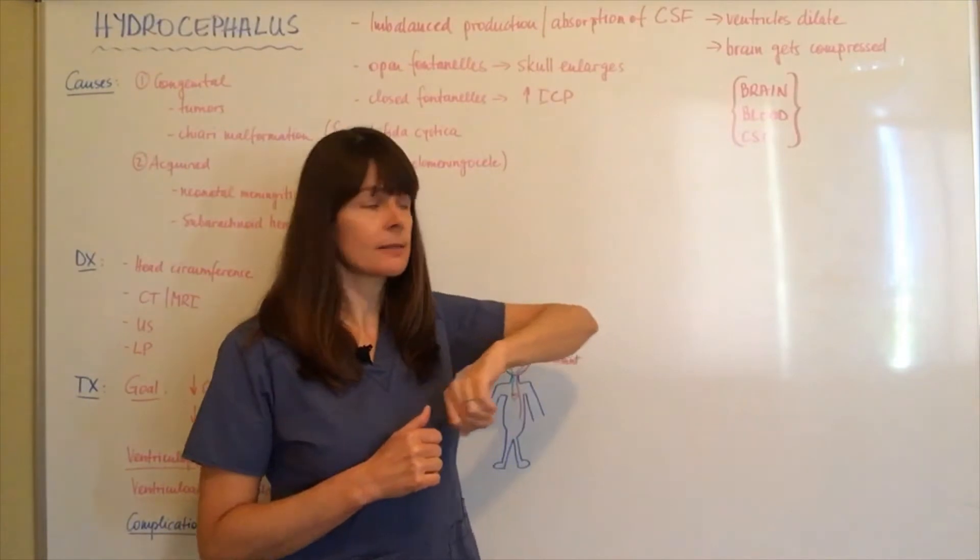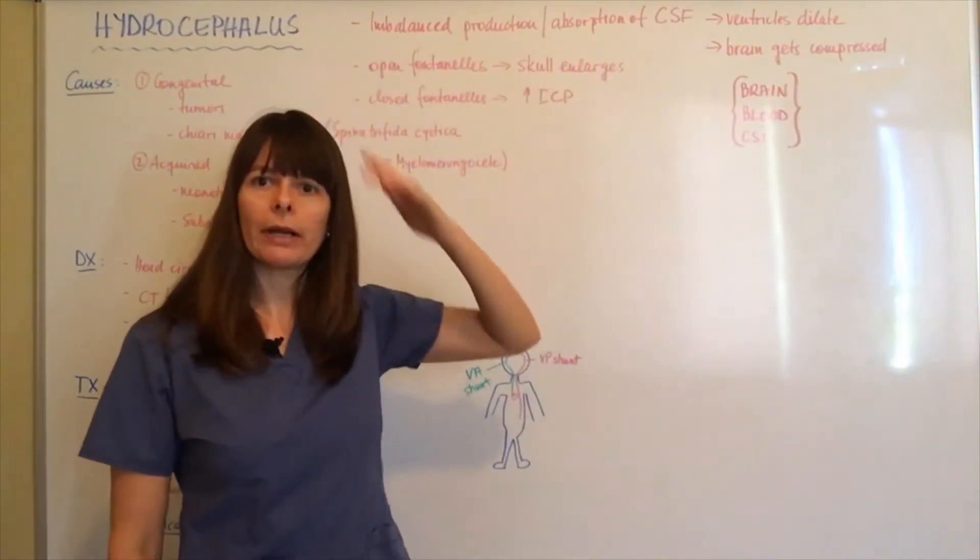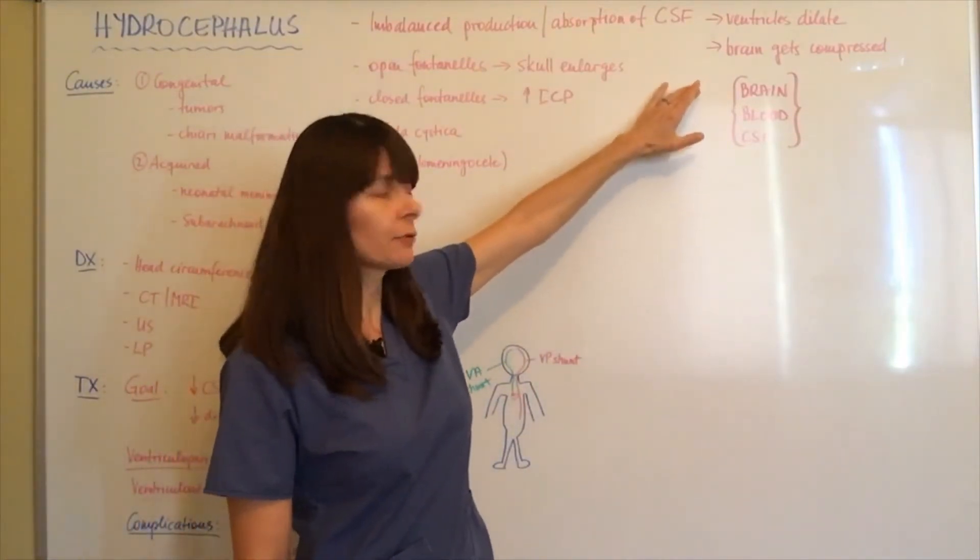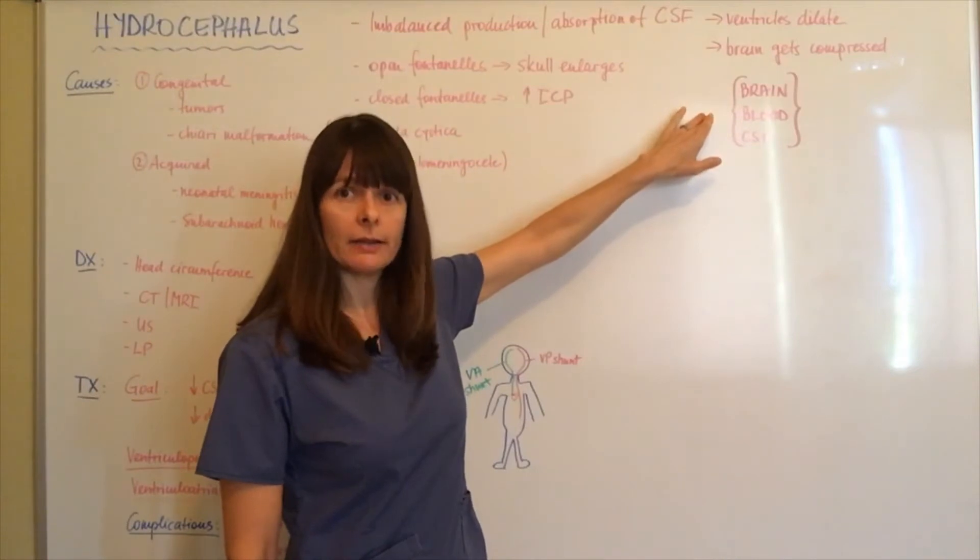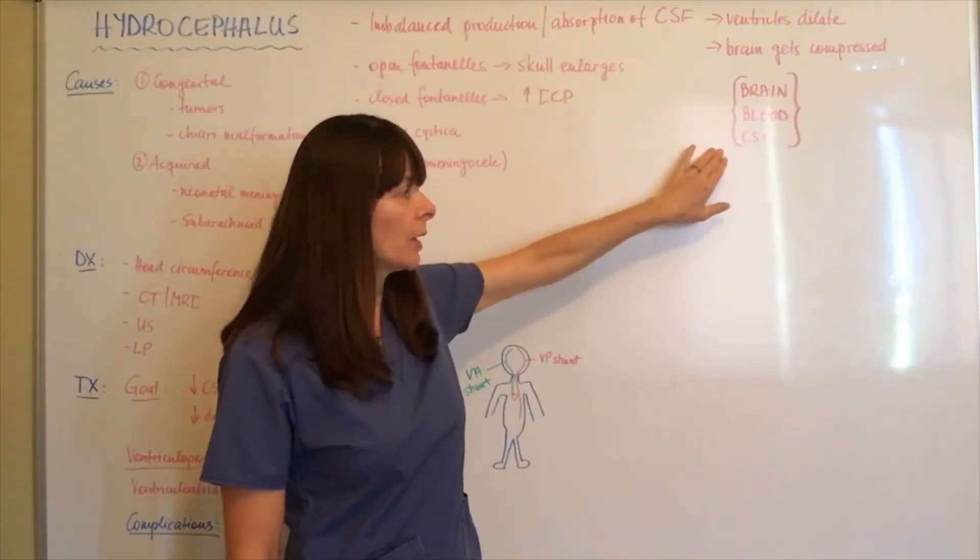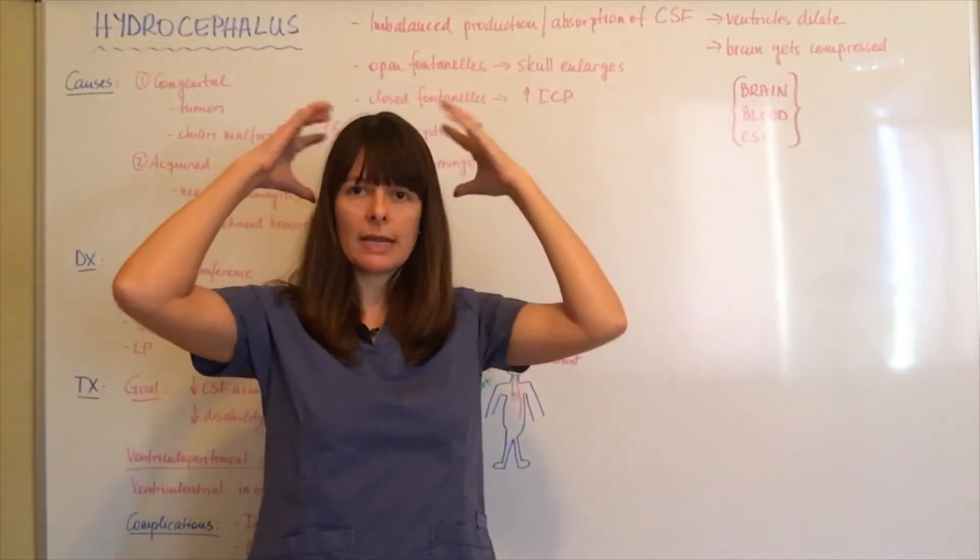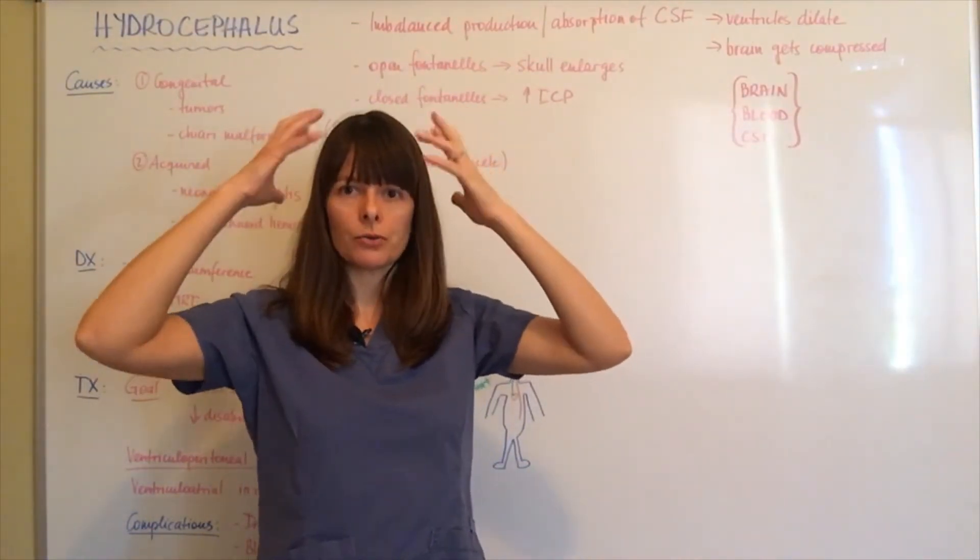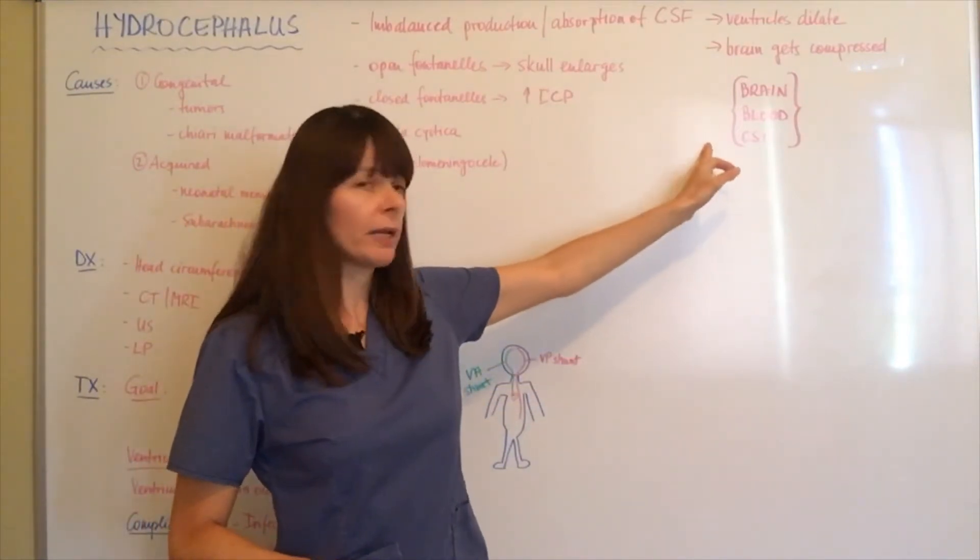I wrote down here these three terms. Basically in our cranial cavity we have three components: the brain, blood inside the blood vessels, and cerebral spinal fluid. Usually that's all contained in our skull, which is a nice protective mechanism.